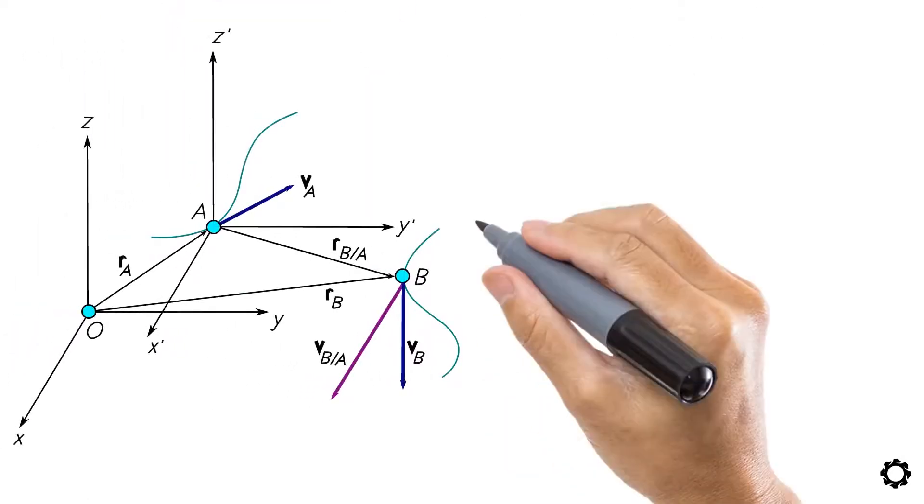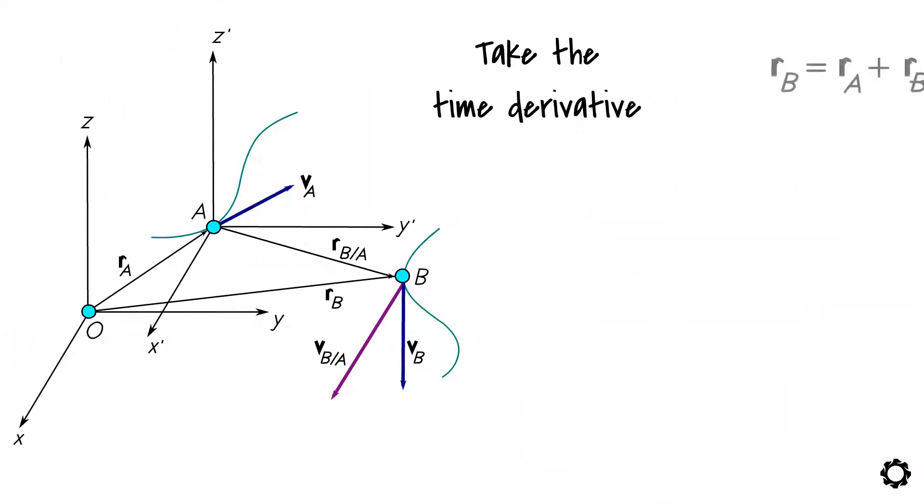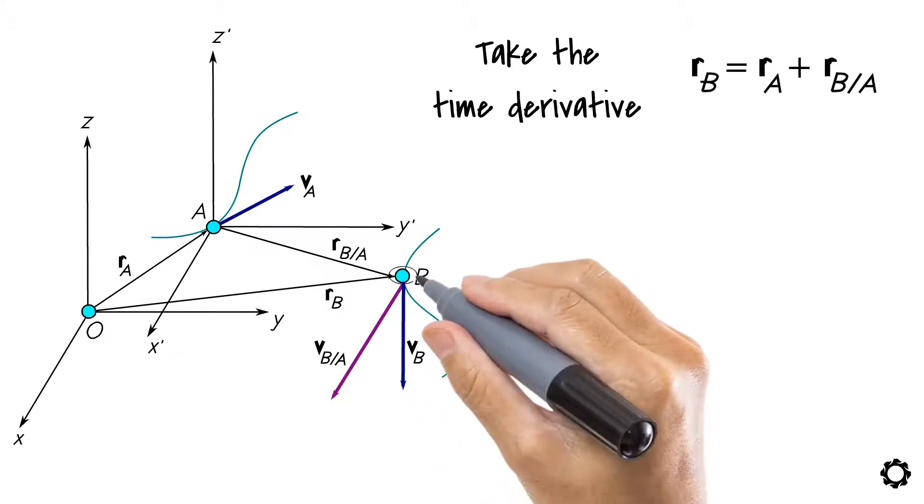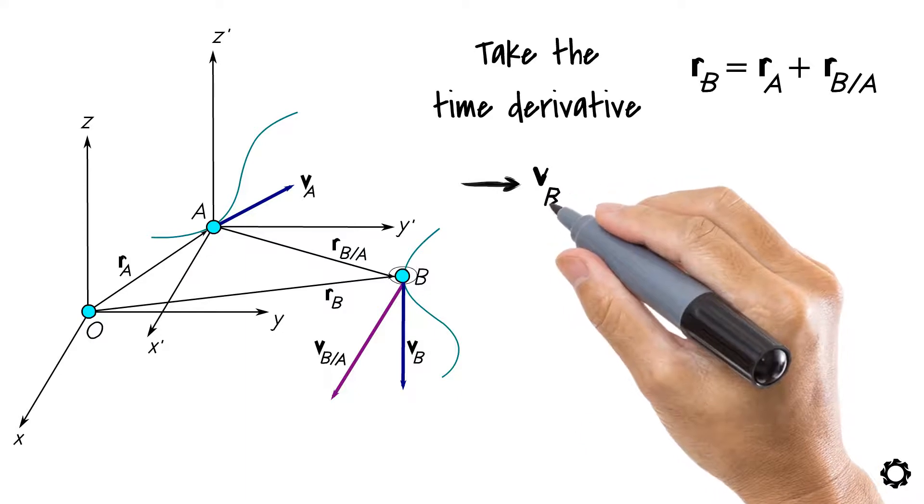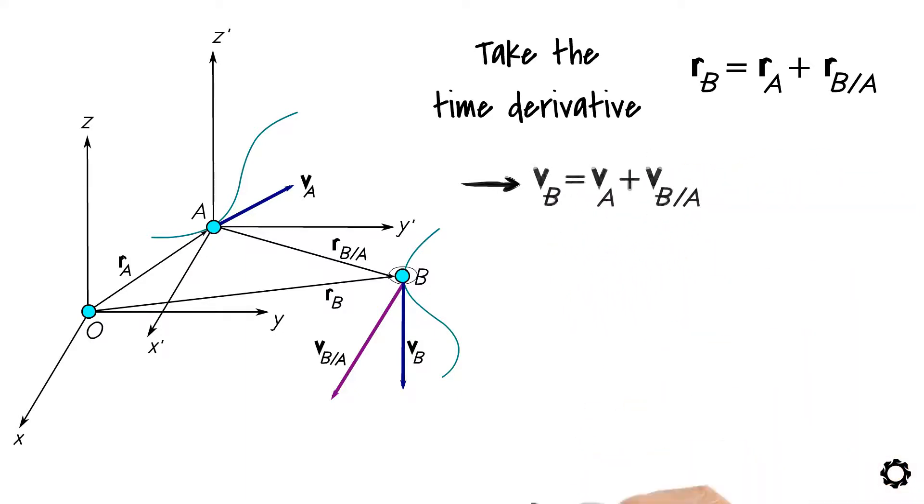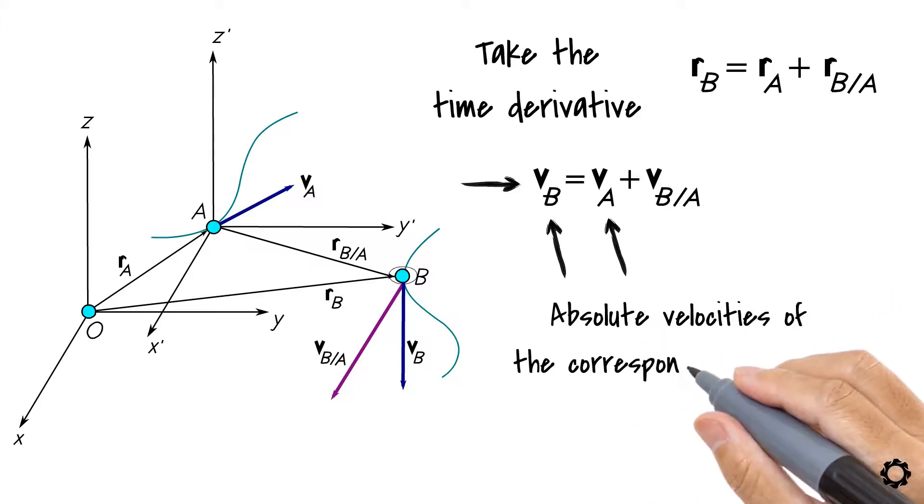We can also solve the velocity relation between the particles if we take the time derivative of the equation related to the position of particle B, which leads us to the following equation: VB equals VA plus VB/A, where VB and VA are absolute velocities of the corresponding particles.